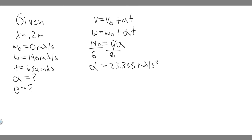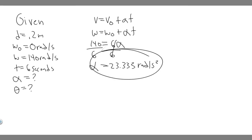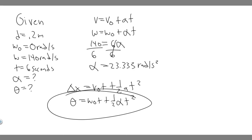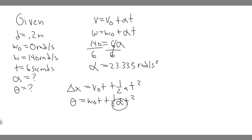Now let's find the angle it turns. Now that we have alpha, we can use a rotational kinematic equation. The analogous linear equation is delta-x equals v-sub-0 times t plus one-half a times t-squared. The rotational version is: theta equals omega-0 times t plus one-half alpha times t-squared. We know the time, the angular acceleration, and omega-0, so we can solve for theta.